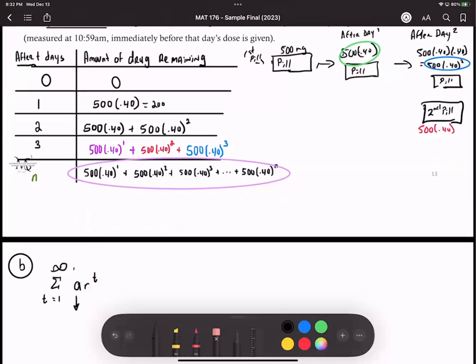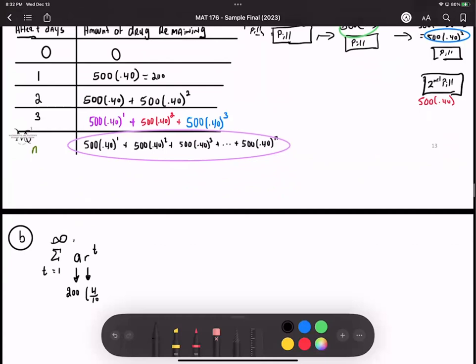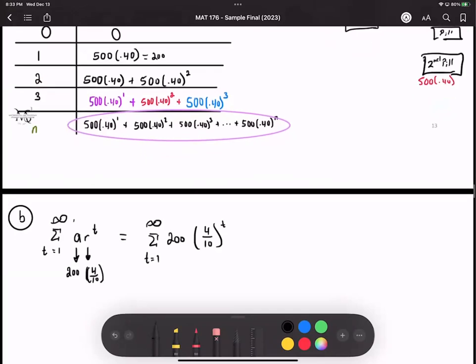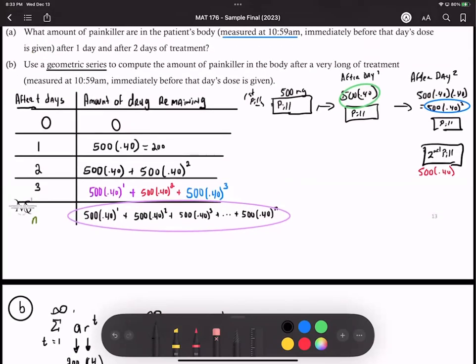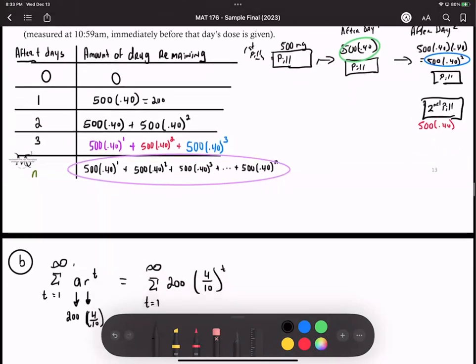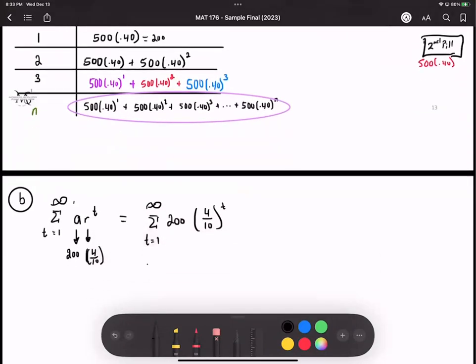So we have a is going to be 200, we'll have r to be 0.40 or you could write it as 4 over 10. I prefer that you guys write it as a fraction like 4 over 10 or probably 2 over 5, only because when you write out your r value you're mostly writing it as a ratio. So we have this series, the sum from t equals 1 to infinity of 200 times 4 over 10 to the t, and you're trying to figure out the amount of painkiller in the body after a very long time of treatment.